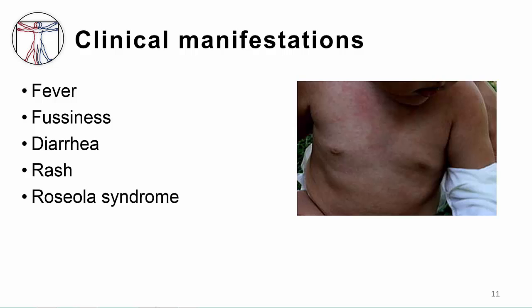Children with primary or first-time infection typically have three to five days of high fever, often over 39 degrees, and irritability. About a third of children have fever and no other symptoms, and one half of children have mild upper respiratory symptoms, primarily nasal congestion. Cervical lymphadenopathy in the occipital region occurs in the majority of children and is more prominent at three to four days of illness. As fever abates, a classic diffuse macular or maculopapular rash, like that seen in the picture, emerges in 20% of patients.